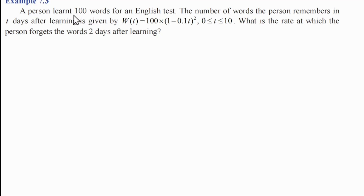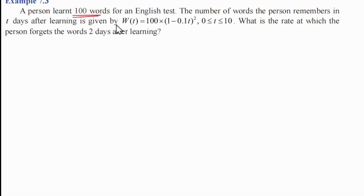100 words are learned for an English test. The number of words the person remembers in t days after learning is given by w(t) = 100(1 - 0.1t)².